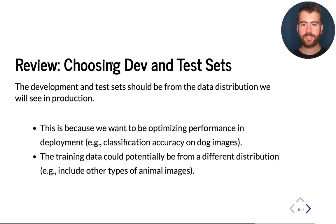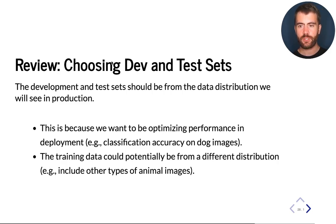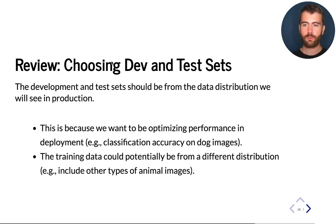Unlike the development and test sets, the training set may or may not be from the same distribution. For example, if we are building a classifier for detecting whether there is a cat or not in an image, it could be useful to also have a data set with many kinds of animal images, or if we're detecting cats versus dogs, it may be useful to also have images of other animals.